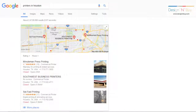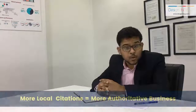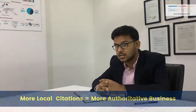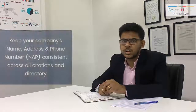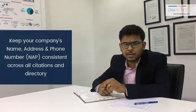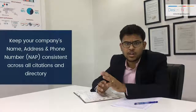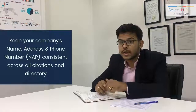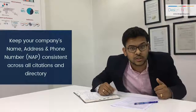This is very important if you want to be found by potential clients among all your competitors. The more local citations you have, the more authoritative Google thinks your business is. You also need to make sure your company's NAP — name, address, and phone number — is consistent across all citations and directories, because if Google is not sure, it might showcase wrong information or might not show your brand at all.